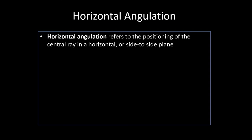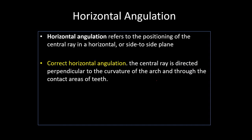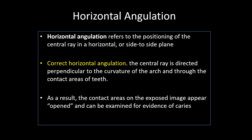Horizontal angulation refers to the positioning of the central ray in a horizontal or side-to-side plane. The correct horizontal angulation directs the central ray perpendicular to the curvature of the arch and to the contact areas of the teeth. The central ray should be perpendicular to the tangent of the curvature of the arch so that the contact areas on the exposed image appear opened and can be examined for evidence of caries.